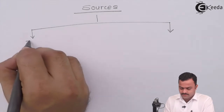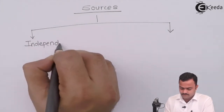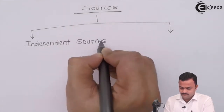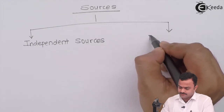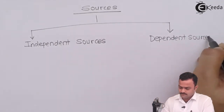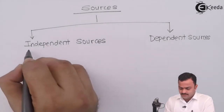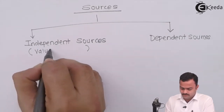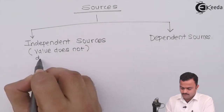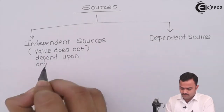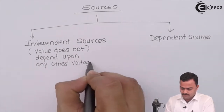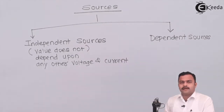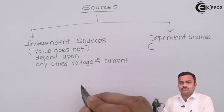One type is the independent source and the other type is the dependent source. As the name suggests, an independent source is a constant source whose value does not depend upon any other voltage or current, whereas in dependent sources the value of the source does depend upon some other voltage or current.